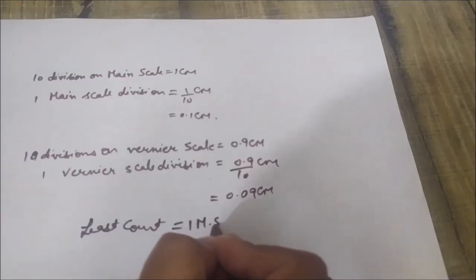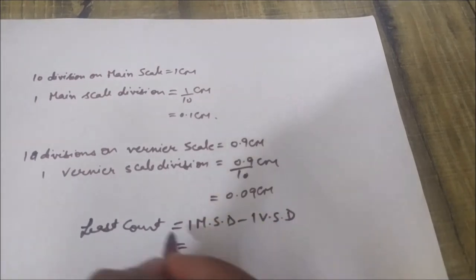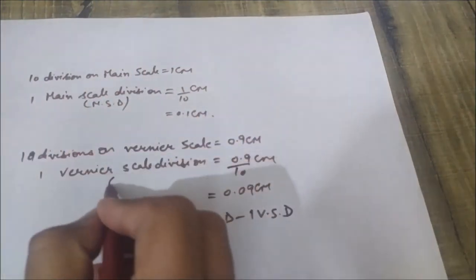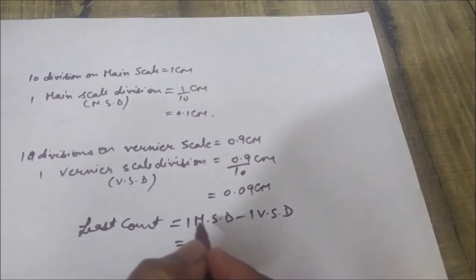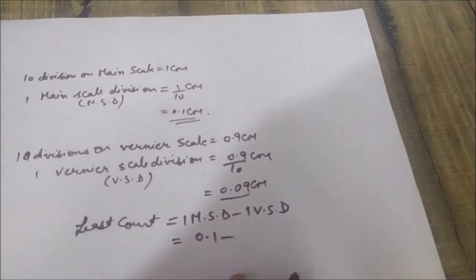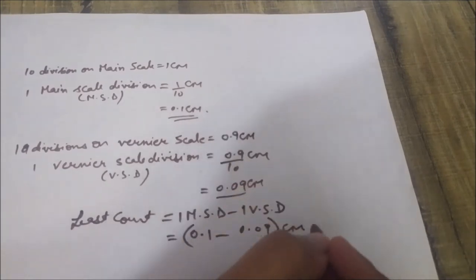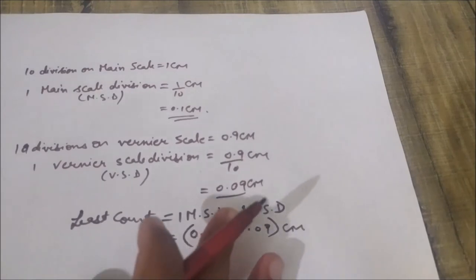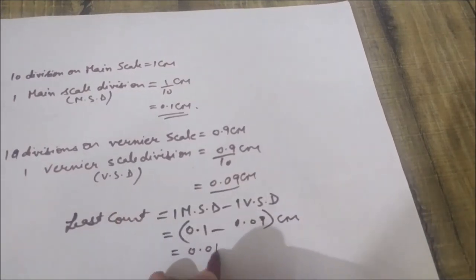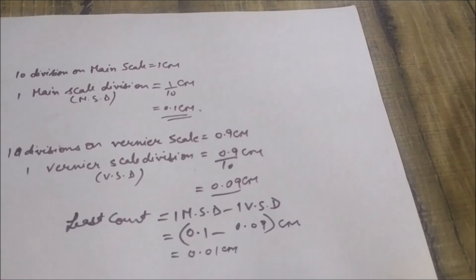Least count equals one MSD minus one VSD. Don't get confused between MSD and VSD. One MSD is 0.1 centimeter and one VSD is 0.09 centimeter. After subtracting, we get 0.01 centimeter. So the least count of this Vernier caliper is 0.01 centimeter.